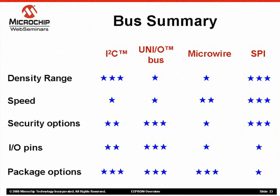So what's the best bus? That depends on the needs of the application. If speed is the most important factor, SPI or Microwire is the way to go. If speed at high density is most important, Microwire drops out and SPI is the clear choice. I2C is the most popular bus, probably because of its wide density range, small packages, and modest IO requirements. And if you are pin-limited or space-limited, a UNEO device may be the best answer.